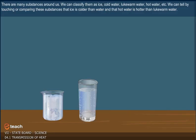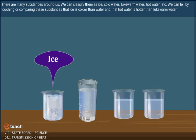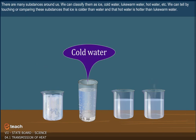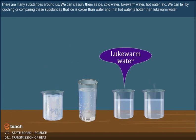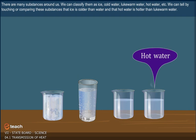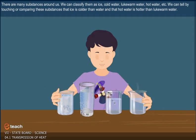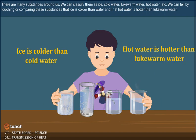There are many substances around us. We can classify them as ice, cold water, lukewarm water, hot water, etc. We can tell by touching or comparing these substances that ice is colder than water and that hot water is hotter than lukewarm water.